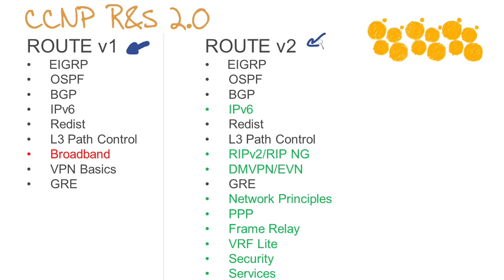And then you can see here the new version, side by side. There's a lot that remains the same: EIGRP, OSPF, BGP, Redistribution, Layer 3 Path Control, GRE. If you've been studying for the current route version 1, all of these are going to translate into version 2 with one exception.